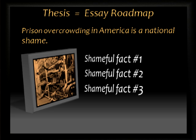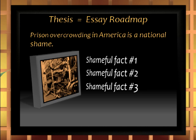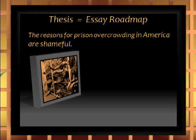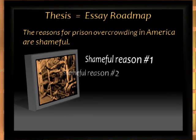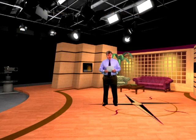The writer really has very little choice. There may be more than three shameful facts about prison overcrowding, or maybe fewer — that depends upon the length of the assignment. Now, here's another important point: if you alter the thesis, the roadmap changes. For example, let's change our thesis to this: the reasons for prison overcrowding in America are shameful. Again, the writer has very little choice. In the essay must be shameful reason number one for overcrowding, shameful reason number two, and shameful reason number three — or however many are required. So, once you have that thesis, you have a very clear roadmap to what is going to follow in the rest of your essay.